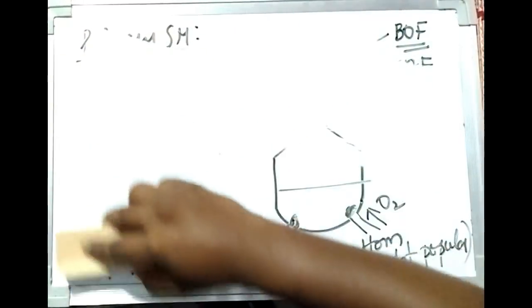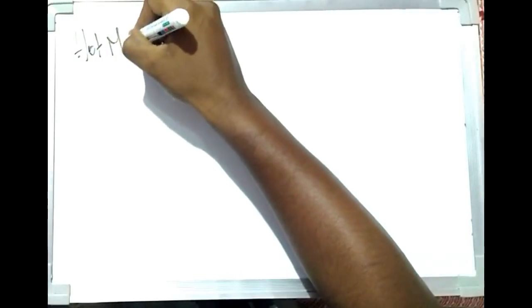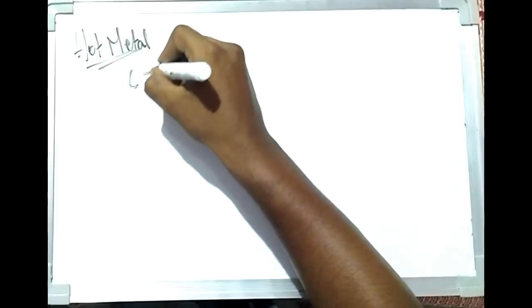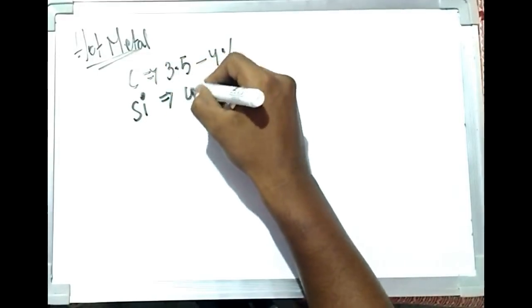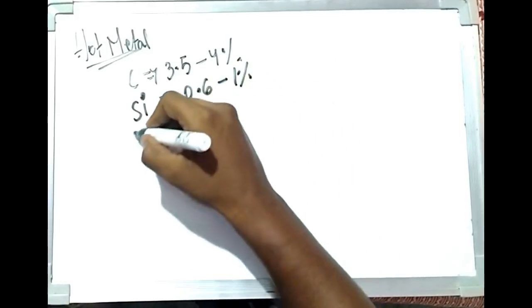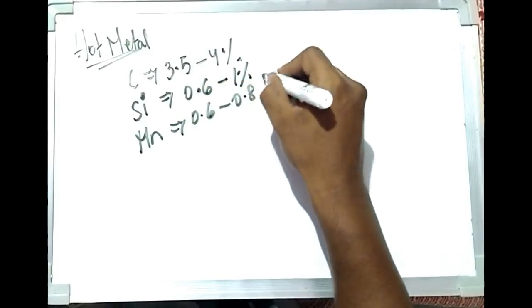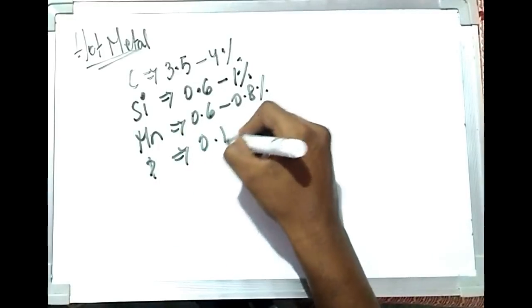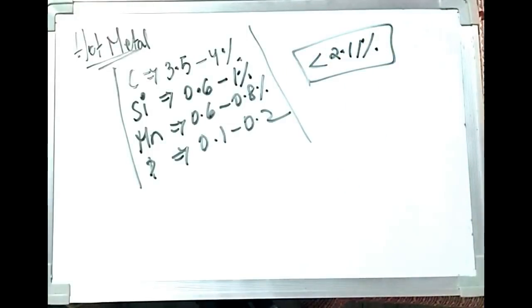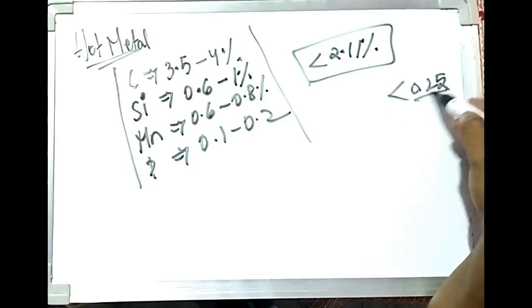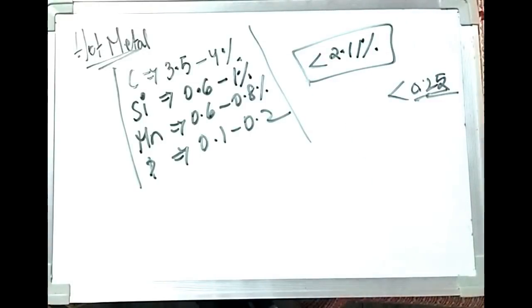Now let's see the different reactions taking place in the converter. The hot metal composition consists of: carbon at about 3.5–4%, silicon at about 0.6–1%, manganese at about 0.6–0.8%, and phosphorus at about 0.1–0.2%. Our aim is to reduce these contents because steel has a carbon content of less than 2.11%, and for low carbon steel applications it must be less than 0.25%.